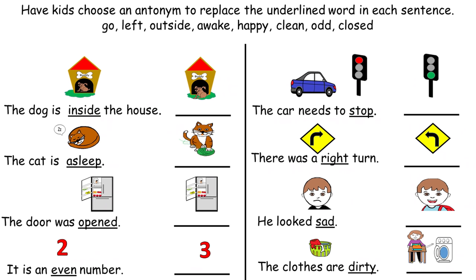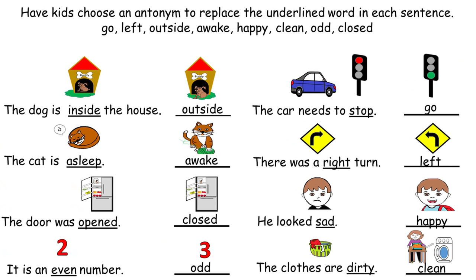Now have kids choose an antonym to replace the underlined word in each sentence. The words they can choose from are go, left, outside, awake, happy, clean, odd, and closed. For example, the dog is inside the house — they have to look for the antonym of inside, which would be outside. The answers in the first column are outside, awake, closed, and odd, and in the second column: go, left, happy, and clean.